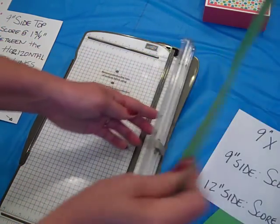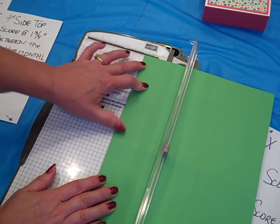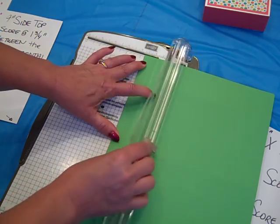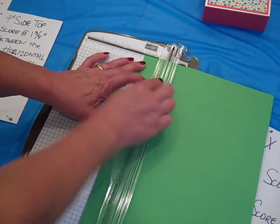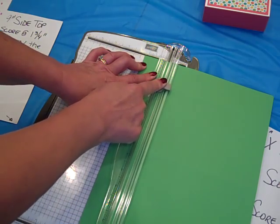And then we want to flip it, still have the nine inch side up at the top, line it up to 1¾ and repeat. Score between those previous two score lines.